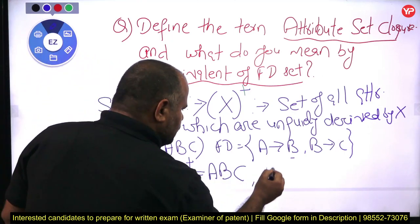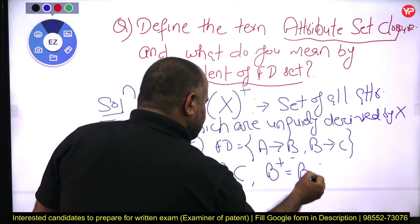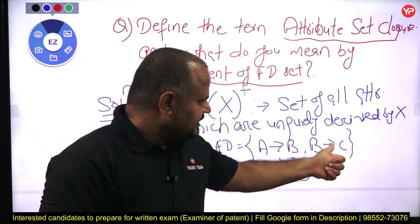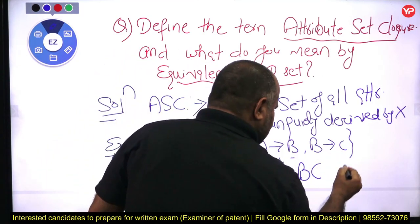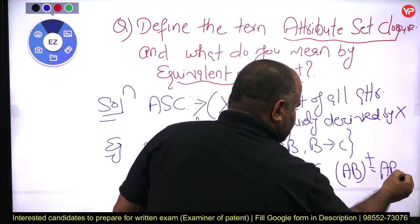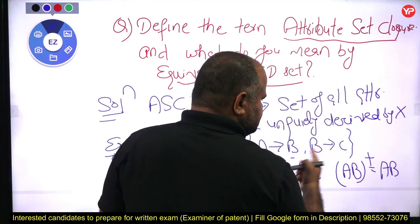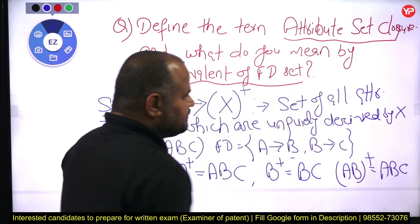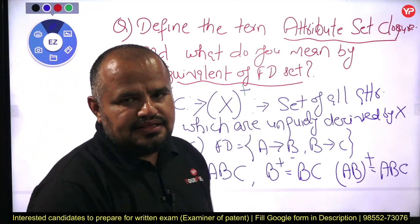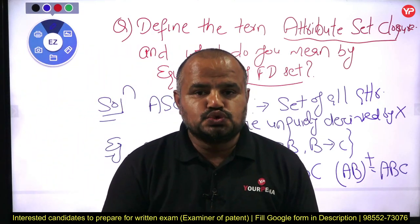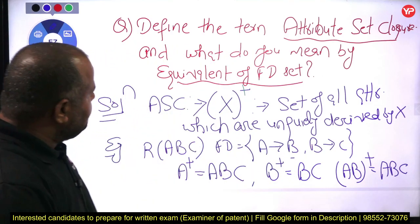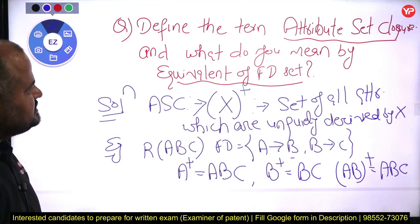Now if you go with B closure, it gives you only B and C, because B uniquely determines C. In the same manner, if you go with AB closure, that gives you A and B as is, then A determines B, B determines C — by transitive property C also. The main use of finding attribute set closure is for finding the super keys of a relation R.